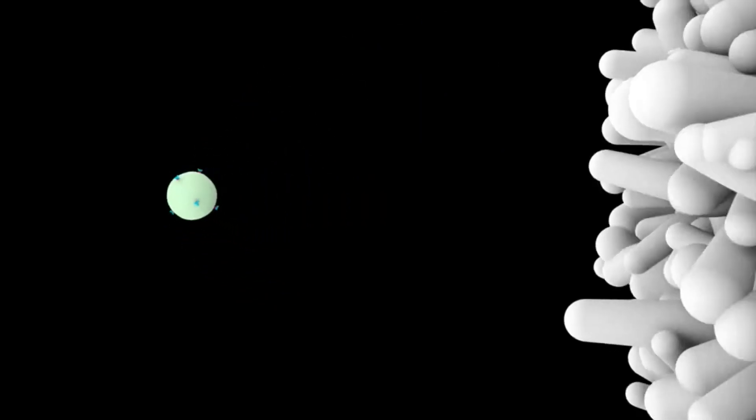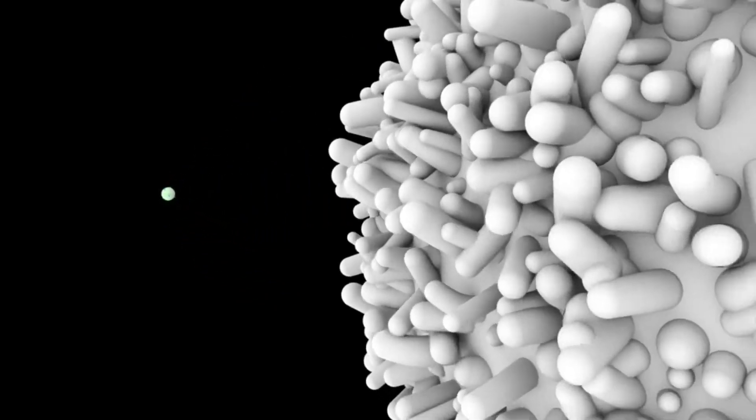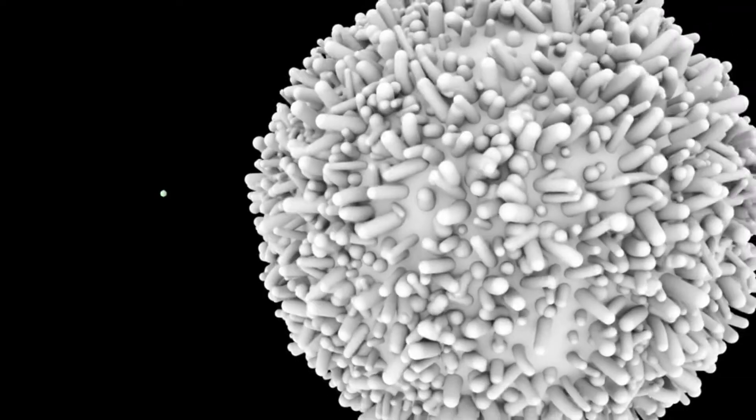At about 100 nanometers in diameter, HIV is about 100 times smaller than its target cell, the T cell, shown here to scale.